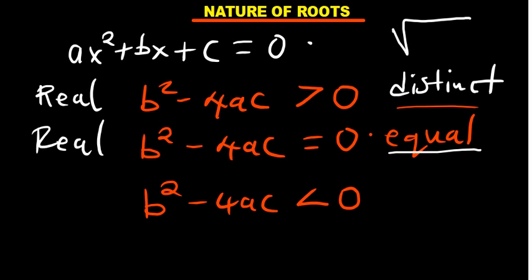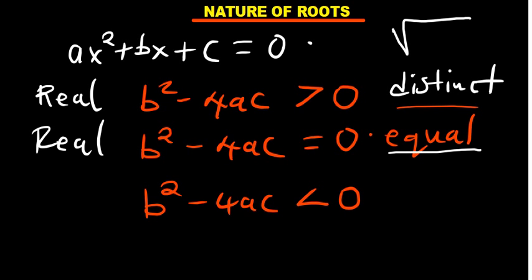When b squared minus 4ac is less than 0, you would need the square root of a negative number, for example the root of negative 2. That is a complex number — you can't find its real value. We say such an equation has no real roots.